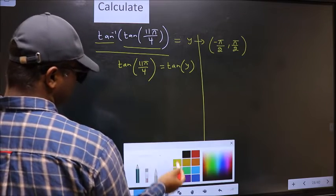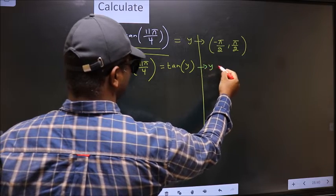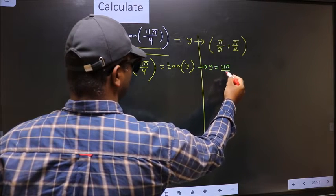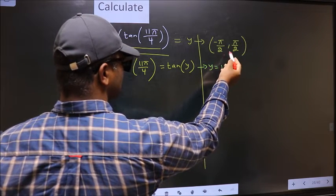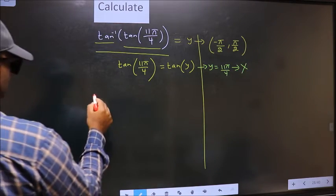Now comparing both sides we get Y to be 11π by 4. Does this lie in this interval? No. So reject this answer.